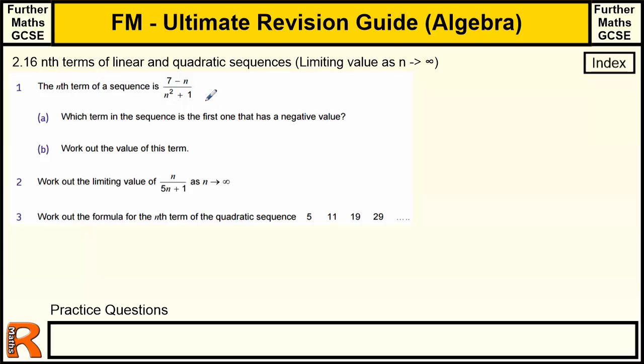The nth term of a sequence is this complicated thing. Which term in the sequence is the first one that has a negative value? Now you might be able to see this straight away, you might not. I would always suggest with this sort of thing is just to have a go, see what happens. So the first term would be when n is 1, so you'll have 7 minus 1 over 1 squared plus 1. So that's going to be 6 over 1 plus 1 is 2, so that's going to be 3. So that's the first term.